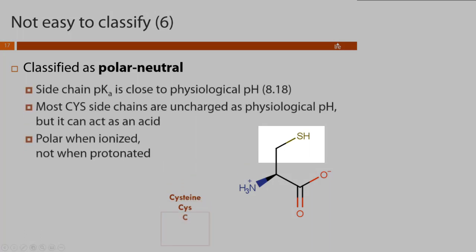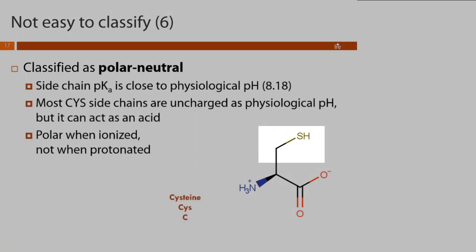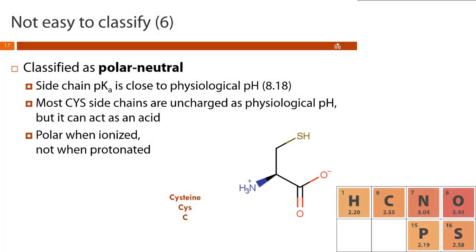Our last one is cysteine; three-letter code CYS, one-letter C. Cysteine is classified as polar neutral. The controversy is that its pKa is so close to physiological pH that we have a mix of two species — most will be in the SH form, but a measurable percentage will be in the S- form. When protonated, cysteine is nonpolar since the electronegativity of sulfur is close to that of carbon and hydrogen; when deprotonated, it's charged and very polar. So textbooks split the difference and classify cysteine as polar neutral.